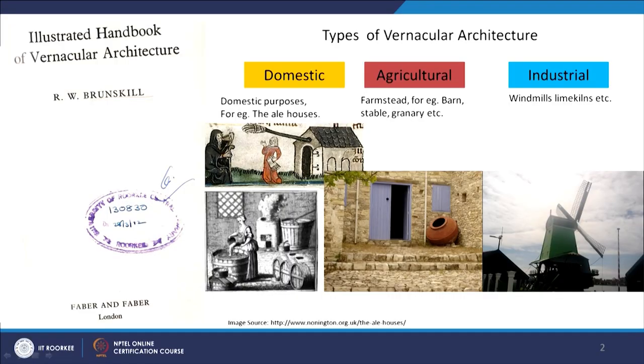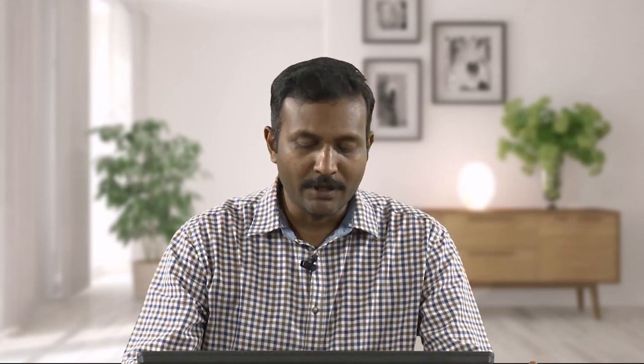When we talk about stone in connection with vernacular architecture studies, I would like to bring an important contribution — not only on stone in terms of materials, but especially on vernacular resources and technology. This is where Brunskill's work on the Illustrated Handbook of Vernacular Architecture and his observations throughout England and the United Kingdom are valuable. He classified vernacular architecture similarly to how Amos Rapoport classified it, using material and size as subjects of classification.